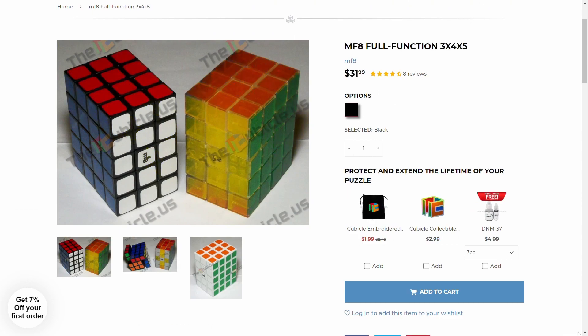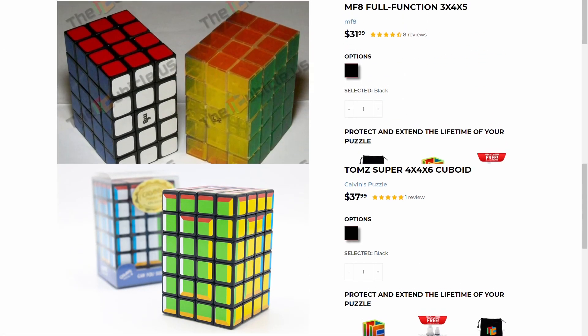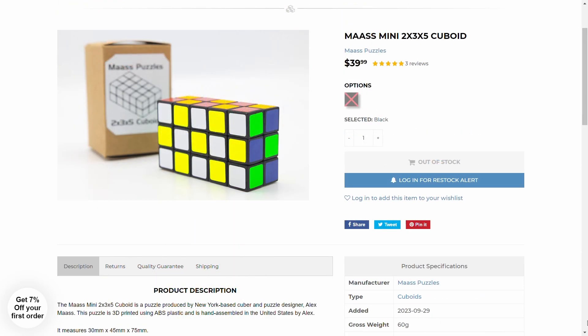But let's compare it to some mass produced cuboids. The MF8 3x4x5 is nine dollars cheaper than the 2x3x5 while the Calvin's puzzle 4x4x6 is two dollars cheaper. Both of these cuboids designed by Tom van der Zanden are substantially more involved solves than this 2x3x5. So the 2x3x5 acts as more of a slot filler since there's no mass produced 2x3x5 available. And clearly there is interest in people's collections having that slot filled since the first batch has already sold out.